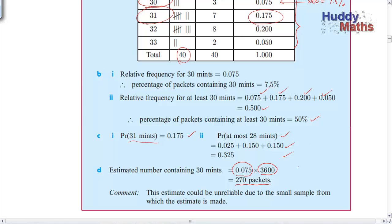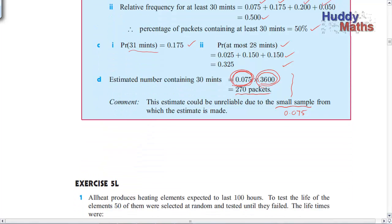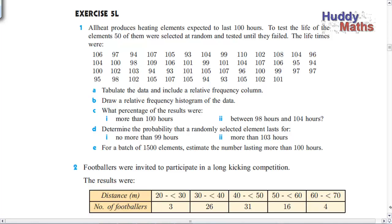This is called extrapolation — you're taking a small sample in which you've got 0.075 and then extending or extrapolating it to a much larger number from the population. That may not be accurate because we've only got a small sample. If we took more, that fraction within the group might change — it might be a better estimate if we took a larger sample. Now, are you ready to have a go and see what you can get out of a data set by doing this relative frequency calculation? Pause the presentation and have a go.